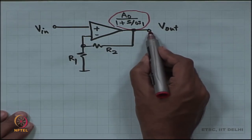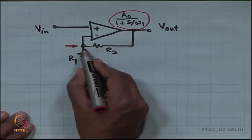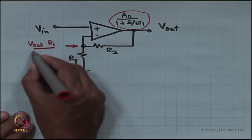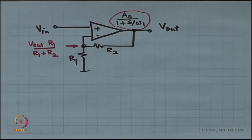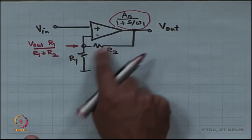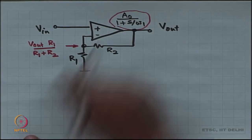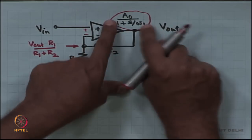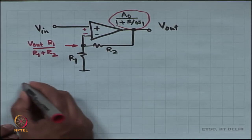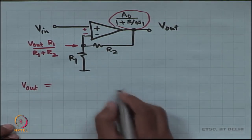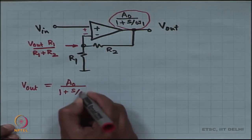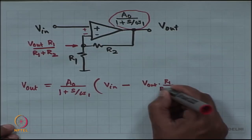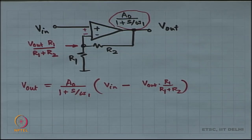Let us analyze and find out the relationship between V in and V out, given that the op-amp does not have infinite gain anymore — it has a gain which is a function of frequency with limited gain. We have V out here. The voltage at the inverting input is V out times R1 by R1 plus R2 — resistive division. The voltage difference between the inputs is V in minus this quantity, and that is going to be amplified to give V out. So V out equals A naught by 1 plus S by omega 1, times V in minus V out times R1 by R1 plus R2.